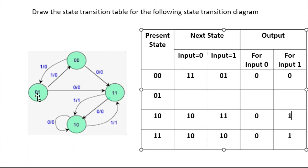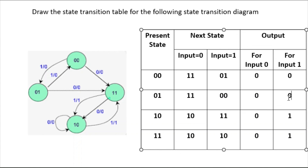Now come to state 0 1. For input 0, it is going to state 1 1 and the output is 0. For input 1, state 0 1 is going to state 0 0 and the output is 0. This completes the state transition table for this state transition diagram.